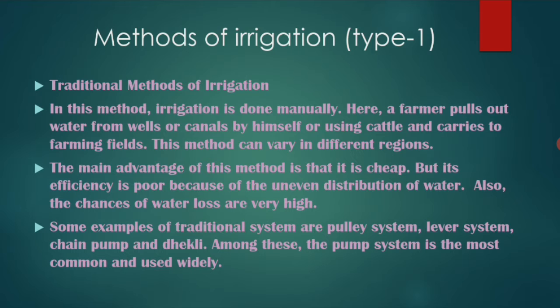Next are the methods of irrigation. There are two types: traditional methods and modern methods. In the traditional method, irrigation is done manually — the farmer pulls out water from wells or canals by himself or using cattle and carries it to the farming fields.